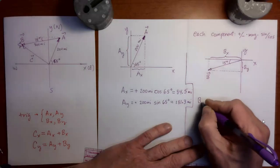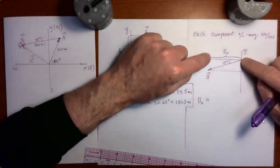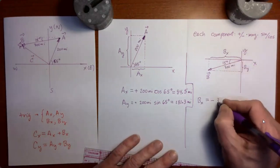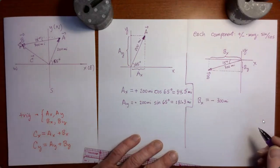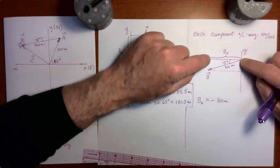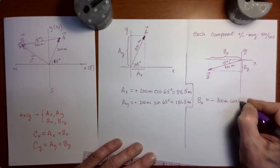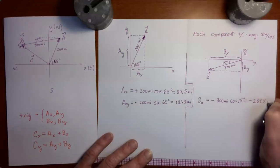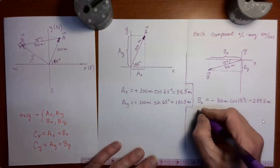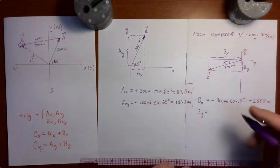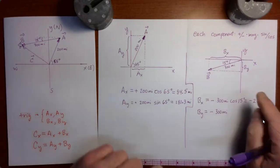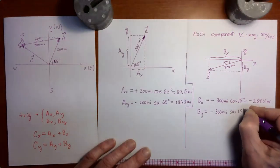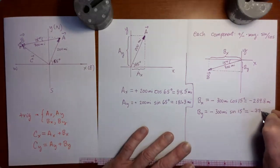Here goes: bx equals — plus or minus? It falls onto the minus x axis, so we put a minus, then the magnitude 300 miles. The x component of b is adjacent to the 15 degree angle, so we use cosine 15. That gives minus 289.8 miles. Similarly, b sub y projects onto the minus y axis, so minus, then 300 miles. b sub y is opposite the 15 degree angle, so we use sine 15, giving minus 77.6 miles.